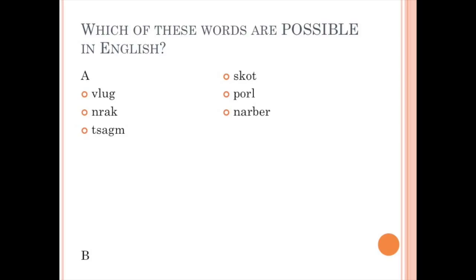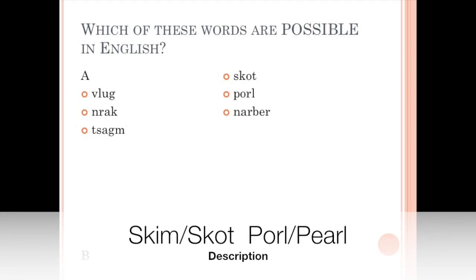Look at the list of words below. Which of these words are possible in English? None of them exist, as far as I know, but some are possible. So look at the two lists — which list do you think has the words that are more possible? I think you'll agree that the words in list B are more possible in English than the words in list A, even though neither list of words are actually real English words.